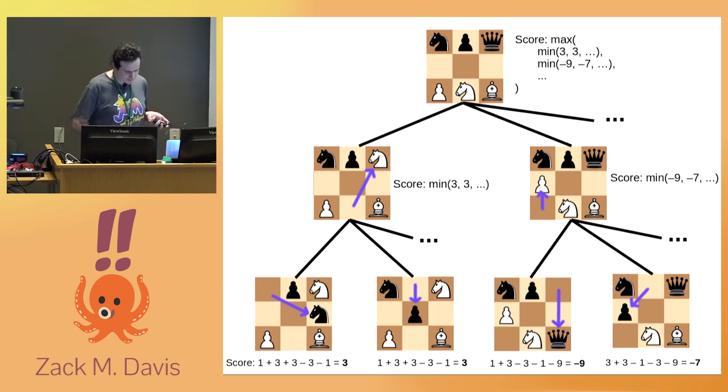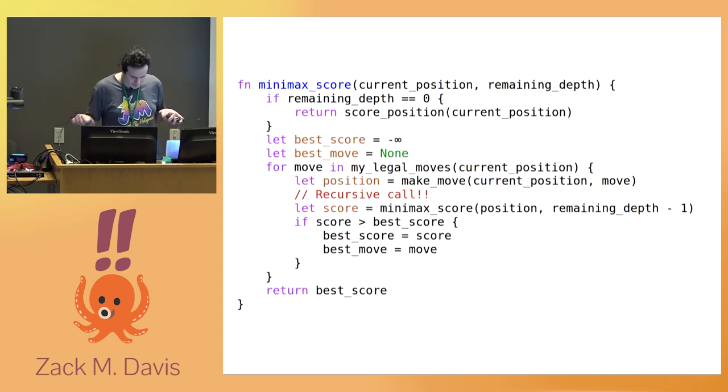So to take this into account, the first player should consider not just the immediate outcome of her move, but what the other player is likely to do after that. And the way you compute that is by asking, well, what would I do if I were in that position except trying to minimize the score rather than maximizing it? And so on recursively.